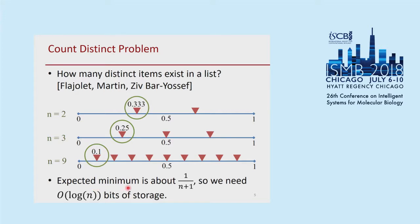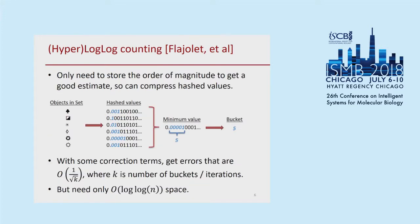The expected minimum is about 1 over n+1, so we need around O(log n) bits of storage for each trial. This was improved by Flajolet et al., who figured out that you only need to store the order of magnitude to get a good estimate. Instead of storing the full hash, they store just the negative logarithm of the hash value — equivalently, the position of the leading one in the binary expansion. They also use a single hash function and partition the dataset into k buckets, storing the minimum value within each bucket. In the end, you still get errors of order 1/√k, and you only need O(log log n) space, a significant improvement over O(log n).